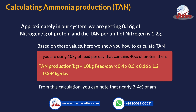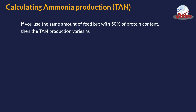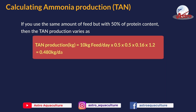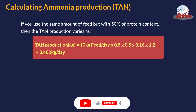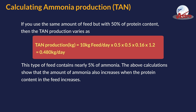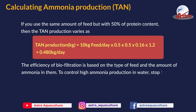From this calculation, you can note that nearly 3 to 4% of ammonia is present in 10 kg of feed. If you use the same amount of feed but with 50% protein content, then TAN production (kg) = 10 × 0.5 × 0.5 × 0.16 × 1.2 = 0.480 kg per day. This type of feed contains nearly 5% ammonia. The above calculations show that the amount of ammonia also increases when the protein content in the feed increases. The efficiency of biofiltration is based on the type of feed and the amount of ammonia in it.